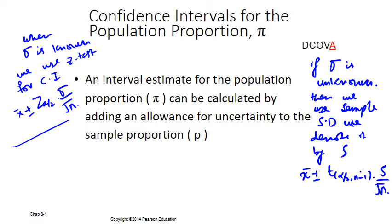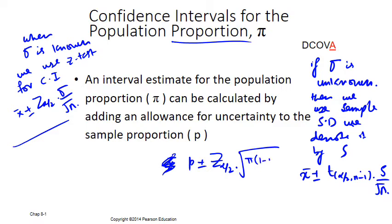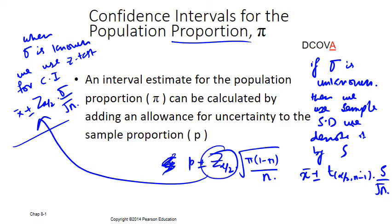Now we are constructing a confidence interval for the population proportion. Nothing different — we use the same formula, but here we write: proportion plus or minus Z alpha by 2 times the square root of pi times (1 minus pi) over n. Z alpha by 2 is the same as before, and we always use the Z-test for proportion.